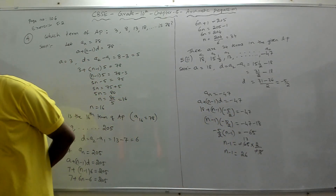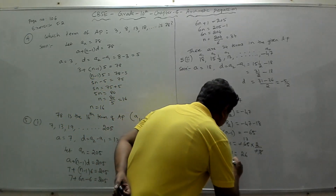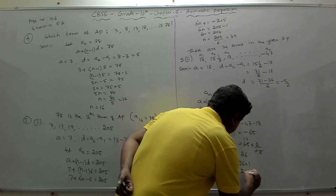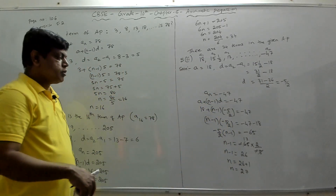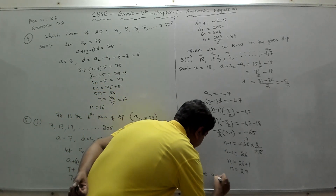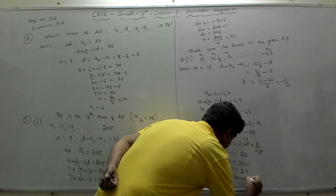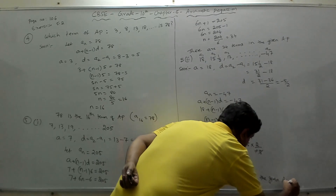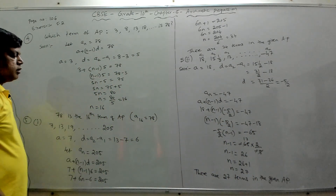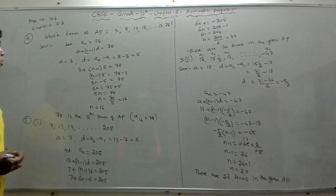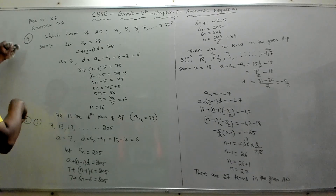So there are 27 terms in the given AP. This completes problem 5. All of you can pause the video and take notes. Let's do the next problem, which is problem 6.